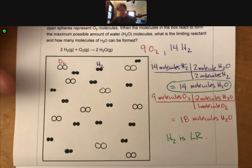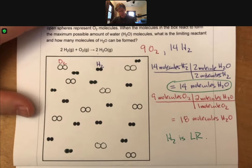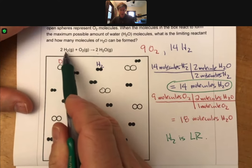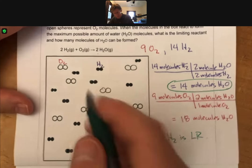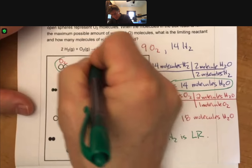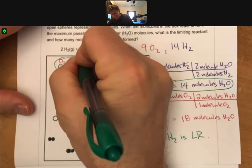You can also do this just by circling them to prove that to yourself. So for example, if I circle 2 hydrogens and 1 oxygen, I can make 2 H2O.